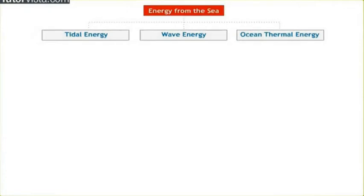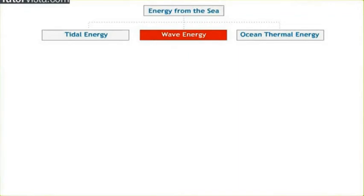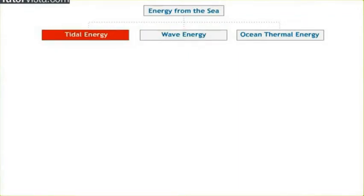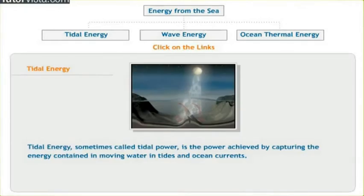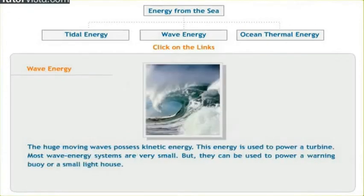The sea has long been seen as a source of energy. There are three basic ways to tap the ocean for its energy: we can use the energy of the waves, we can use the ocean's high and low tides, or we can use temperature differences in the water. Tidal energy, sometimes called tidal power, is the power derived from the huge moving waves.